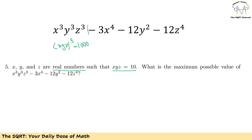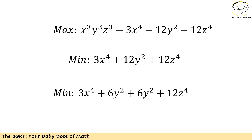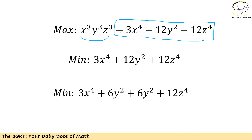Now let's focus on the second part. We have x to the power of 4, y to the power of 2, and z to the power of 4. x to the power of 4 and z to the power of 4 are already power of 4, but y is power of 2. In order to maximize the expression, the first term is a constant, and the second term — which includes three subterms — is what we are going to optimize. Because of the negative sign, we need to minimize 3x to the power of 4 plus 12y to the power of 2 plus 12z to the power of 4.